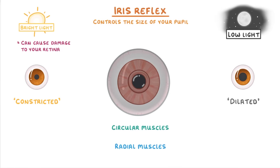If it's dark though, and the pupil needs to let in more light, the circular muscles relax and the radial muscles now contract, making them shorter and pulling the pupil open.